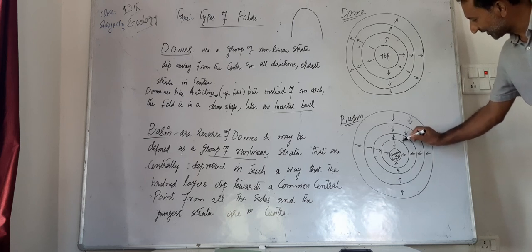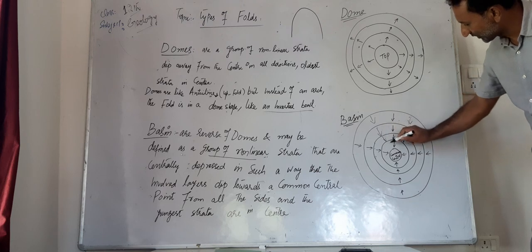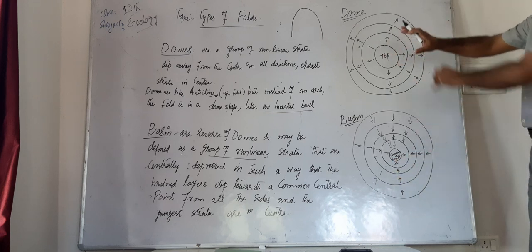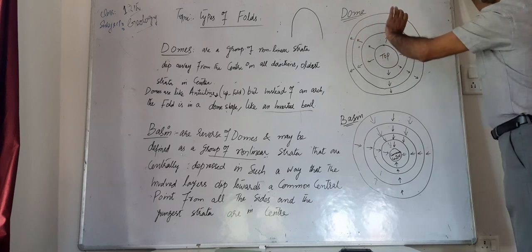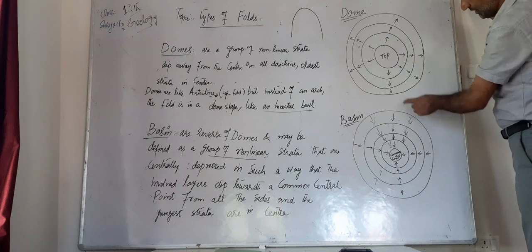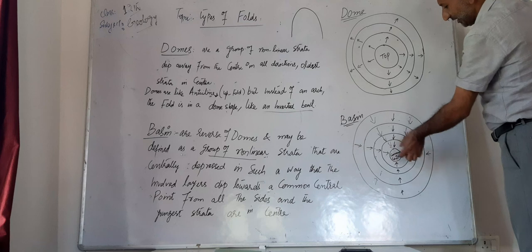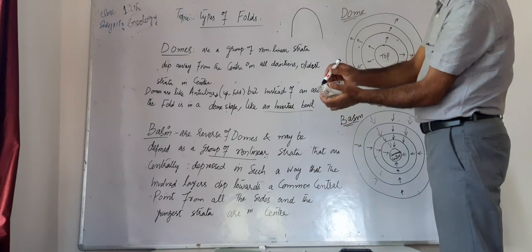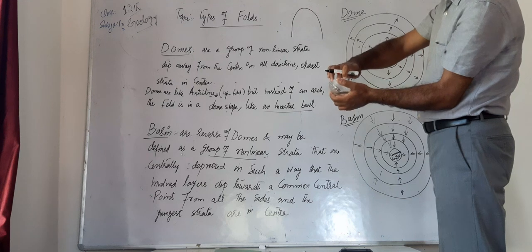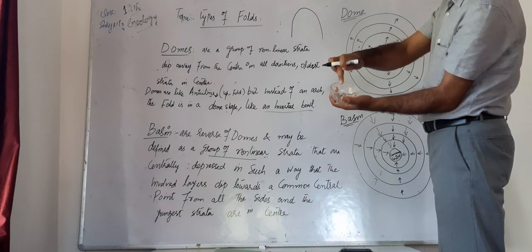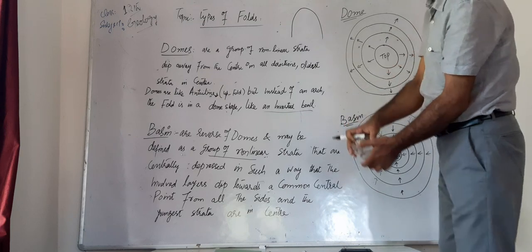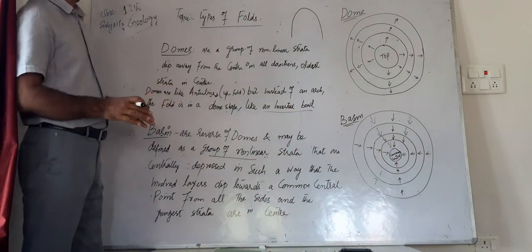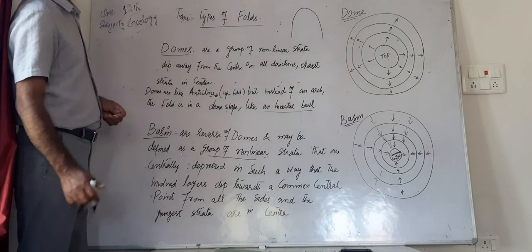In case of dome, from the top the dip was moving in all directions outside the rock strata, whereas in case of basin the dip is always meeting at a common center. When you see rock strata of basin type, the dips are sloping towards the center from all directions, meeting at a common central point. This is a simple type of folding which can be in the form of dome or basin.